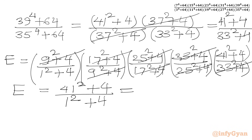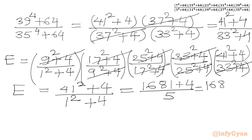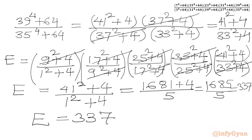Now we know that 41² is 1681, so the numerator is 1681 + 4 = 1685. The denominator is 1² + 4 = 1 + 4 = 5. So this equals 1685 over 5, which gives us 337. Our final answer — the expression value without using a calculator — is 337.